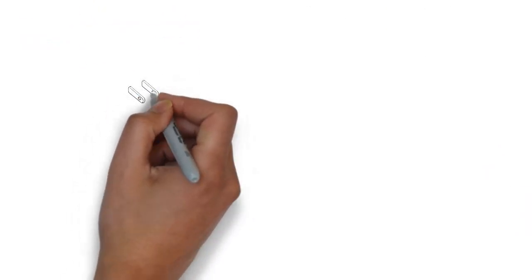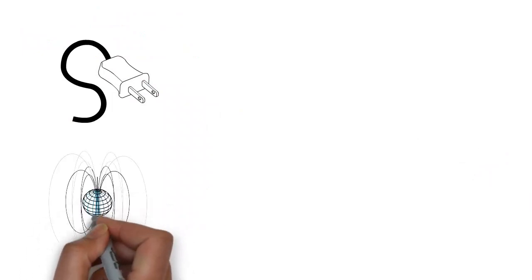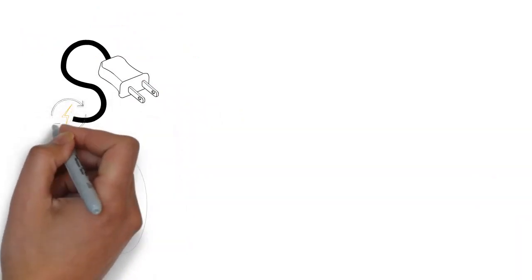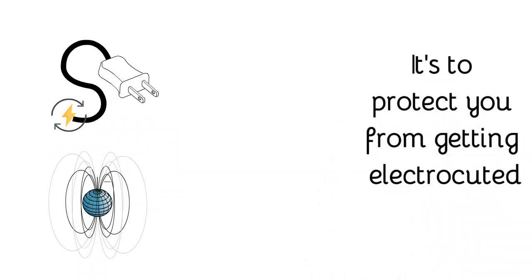Let me explain what a PEMF is. When you have a wire that's conducting current, you have a magnetic field and you have an electrical field. You have the current flowing in the wire. That wire is shielded because it's to protect you from getting electrocuted.